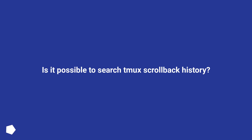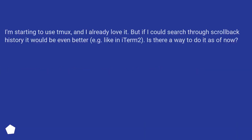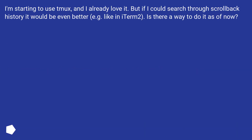Is it possible to search tmux scrollback history? I'm starting to use tmux, and I already love it. But if I could search through scrollback history it would be even better, for example like in term 2. Is there a way to do it as of now?